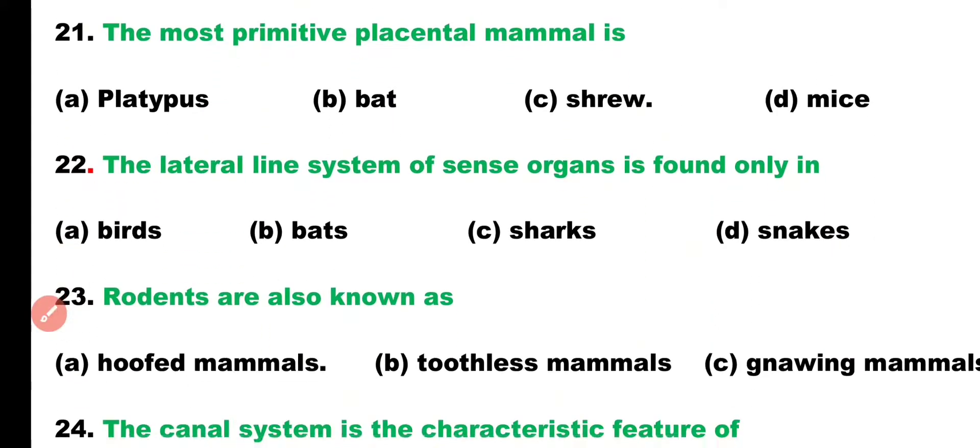Question number 21. Most primitive placental mammal is: platypus, bat, shrew, or mice? Correct answer is Option A. Platypus is the most primitive placental mammal.